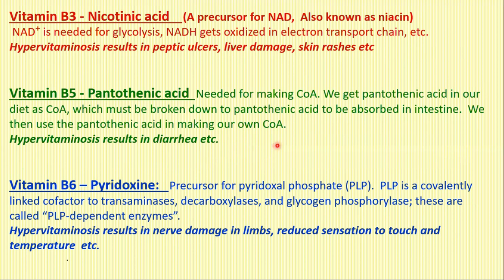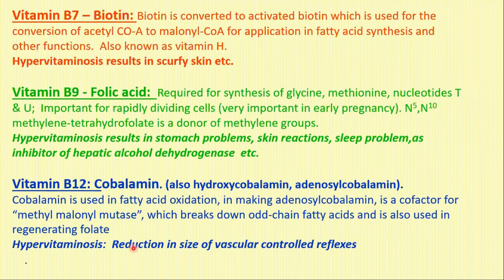Vitamin B6, pyridoxine, is a precursor for pyridoxal phosphate (PLP). PLP is a covalent cofactor for transaminases, decarboxylases, and glycogen phosphorylase, which is a very important enzyme. These are all called PLP-dependent enzymes. Its hypervitaminosis results in nerve damage in limbs, reduced sensation of touch and temperature, etc.